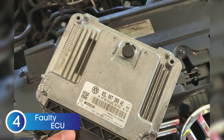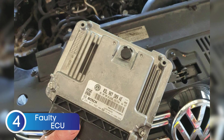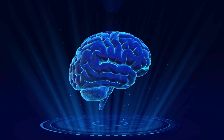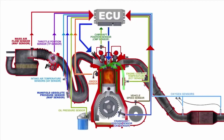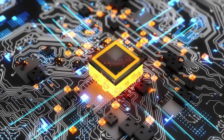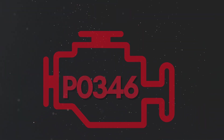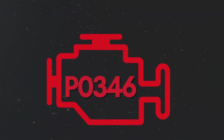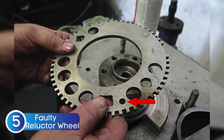The fourth cause is ECU failure or software issues. The ECU, basically the brain of your engine, relies on data from multiple sensors, including the camshaft position sensor, to manage engine timing and fuel injection. While it's rare, the ECU itself can sometimes develop internal faults or software glitches. When that happens, it might misread or misinterpret the signals coming from the camshaft sensor, triggering the P0346 code even if the sensor and wiring are perfectly fine.